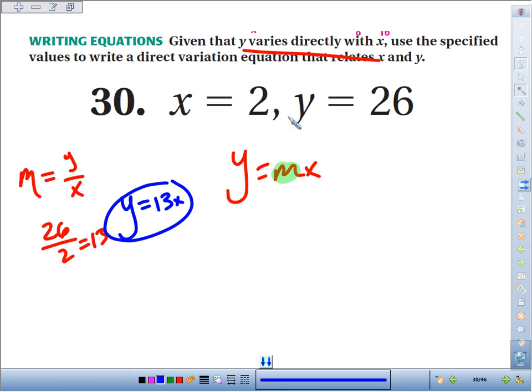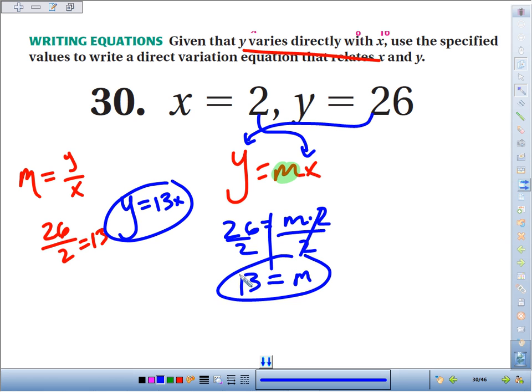Another way to look at it is to say, I know that these two coordinates work. When I plug a 2 in for x and a 26 in for y, I get 26 equals what times 2? Dividing by 2 on both sides, we get m, our common multiple, is 13, which yields that equation y equals 13x.